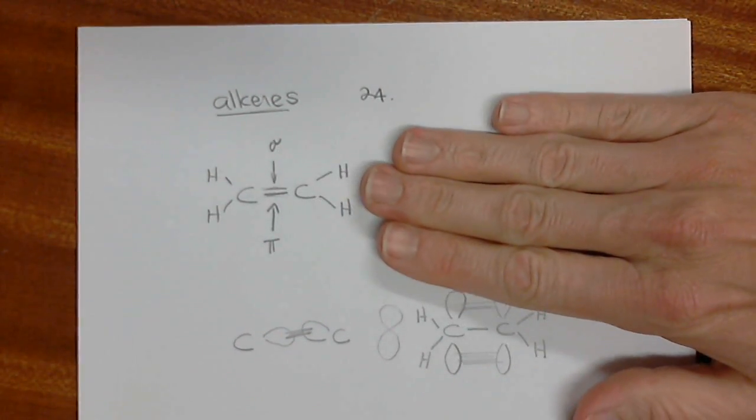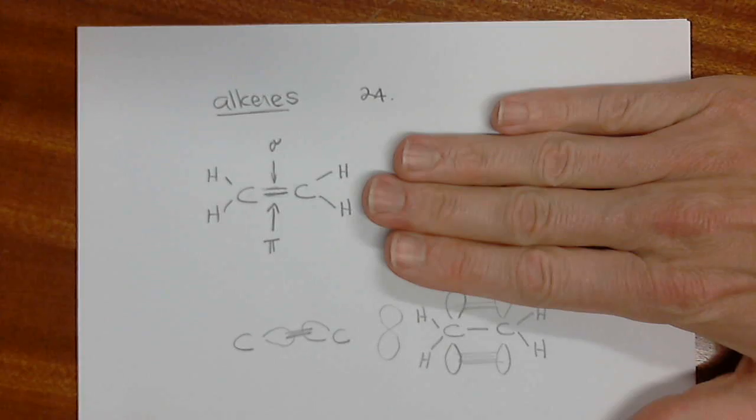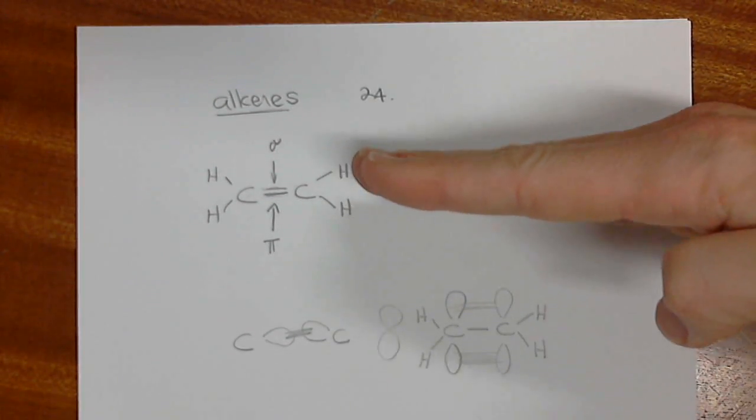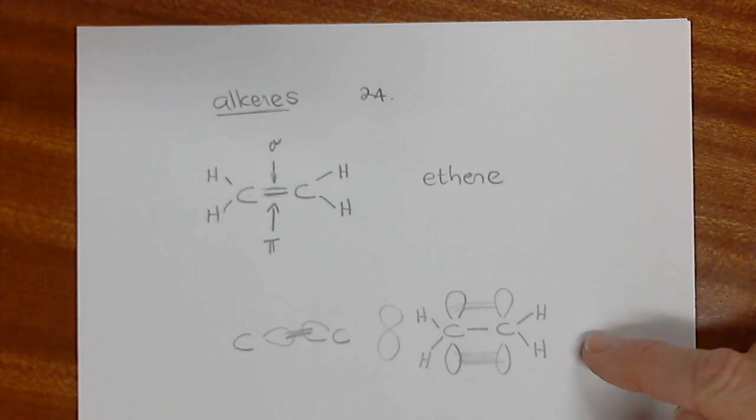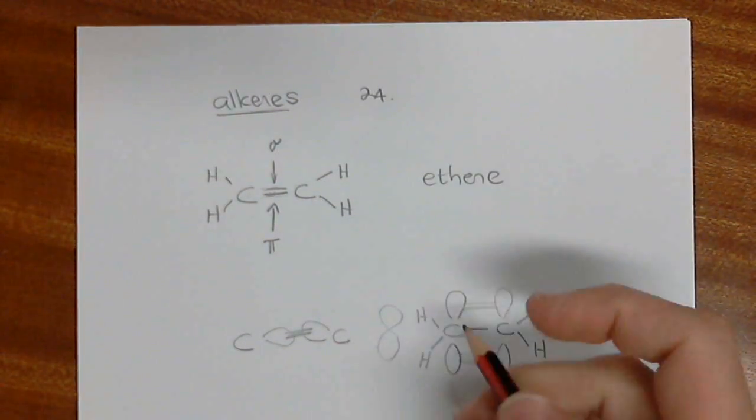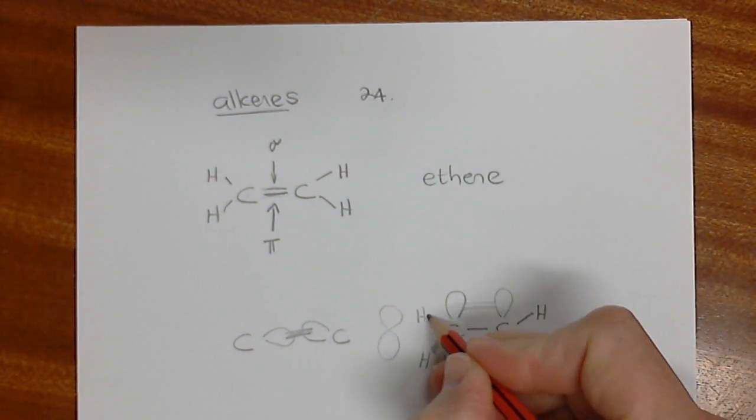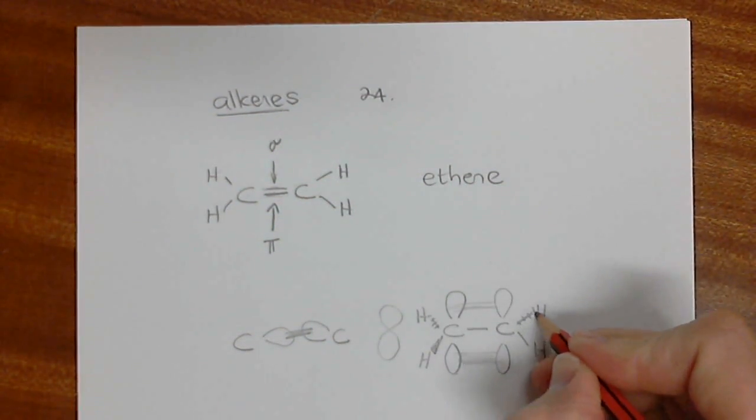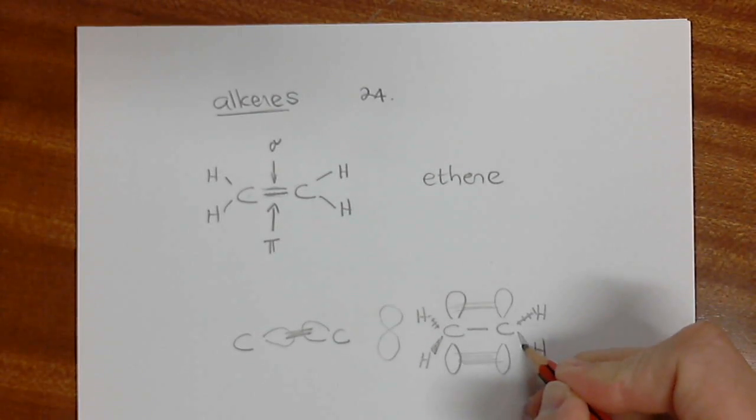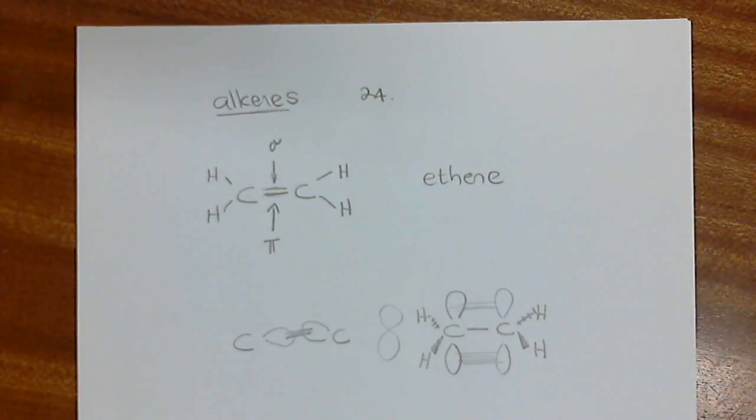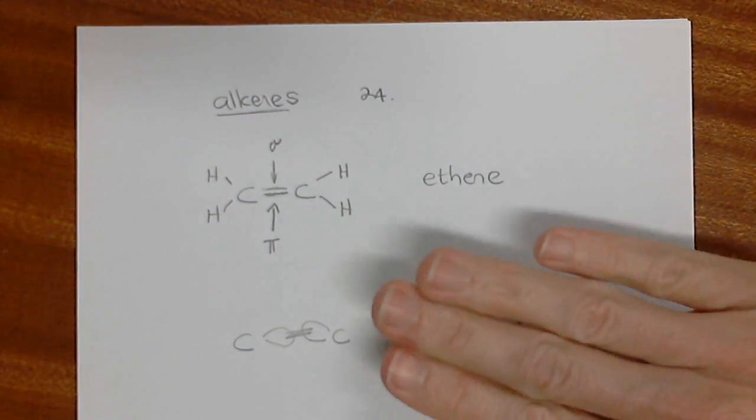It's kind of like this is the flat of my hand, and if I turn it and look at it on the side, this is the structure that I get over here. Even though I've drawn this flat, it's kind of like this H is coming out towards us and this is going towards the back, and that one is going towards the back and this is coming out towards us over there. This picture that I have here is looking at it from the side like that.